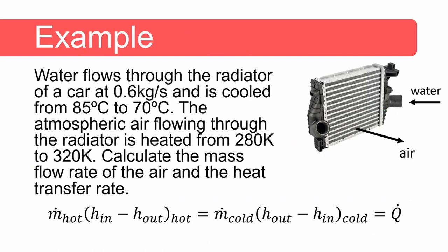Now let's consider the following example. Water flows through the radiator of a car at 0.6 kilograms per second and is cooled from 85 degrees to 70 degrees Celsius. The atmospheric air flowing through the radiator is heated from 280 Kelvin to 320 Kelvin. Calculate the mass flow rate of the air and the heat transfer rate. The water is cooled and the air is heated, so the equation from the previous slide can be used to calculate the mass flow rate of the air and the heat transfer rate.